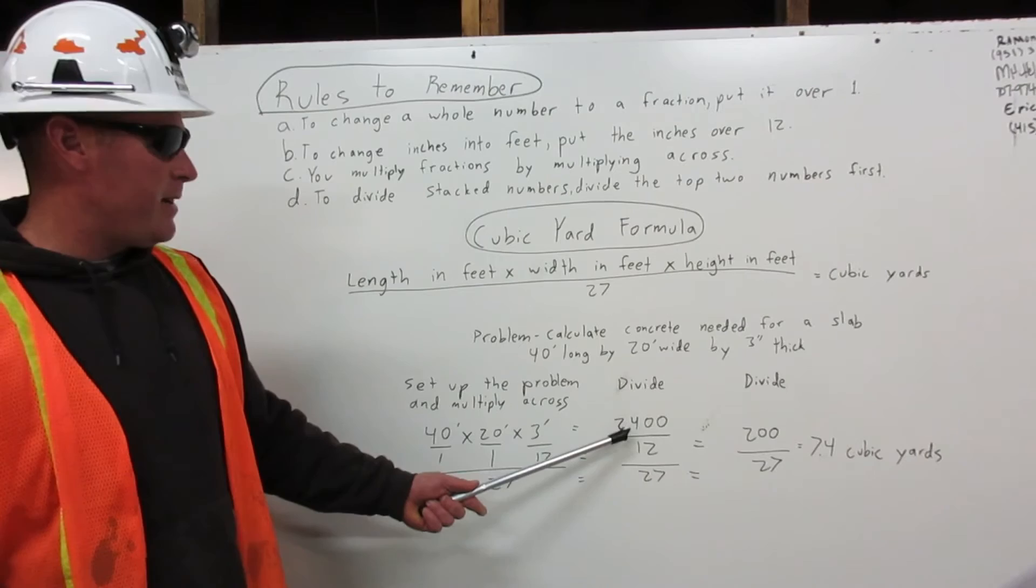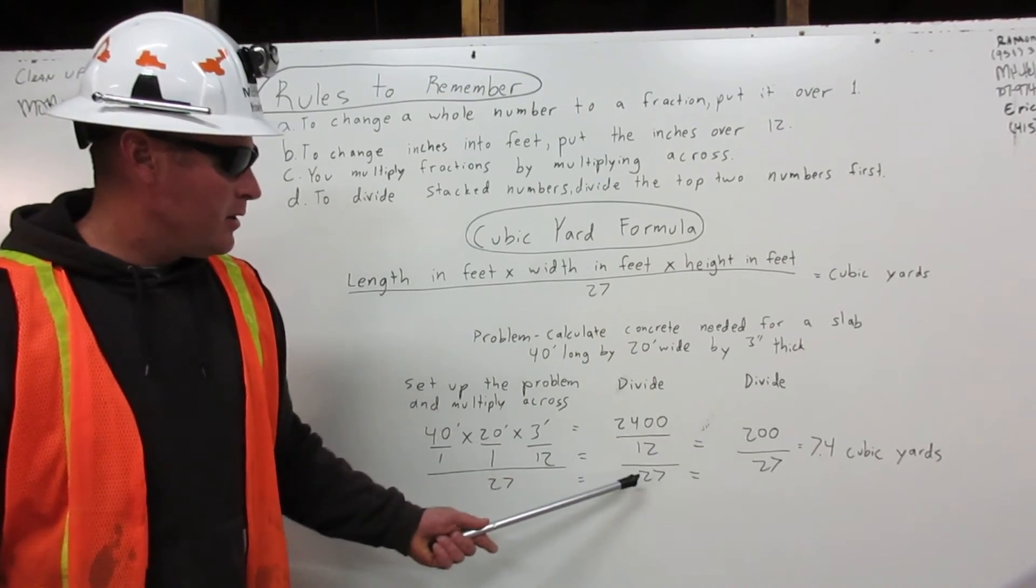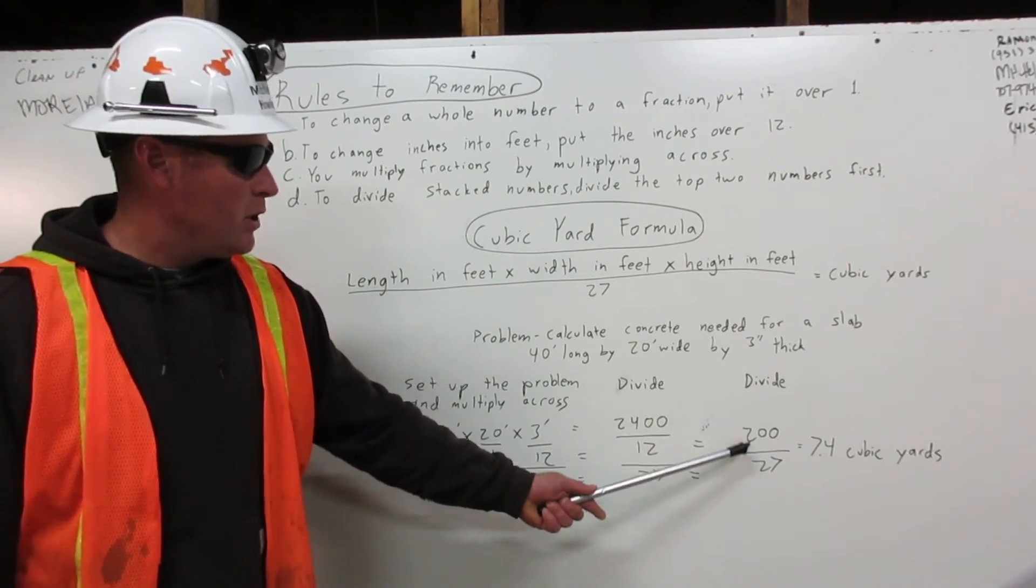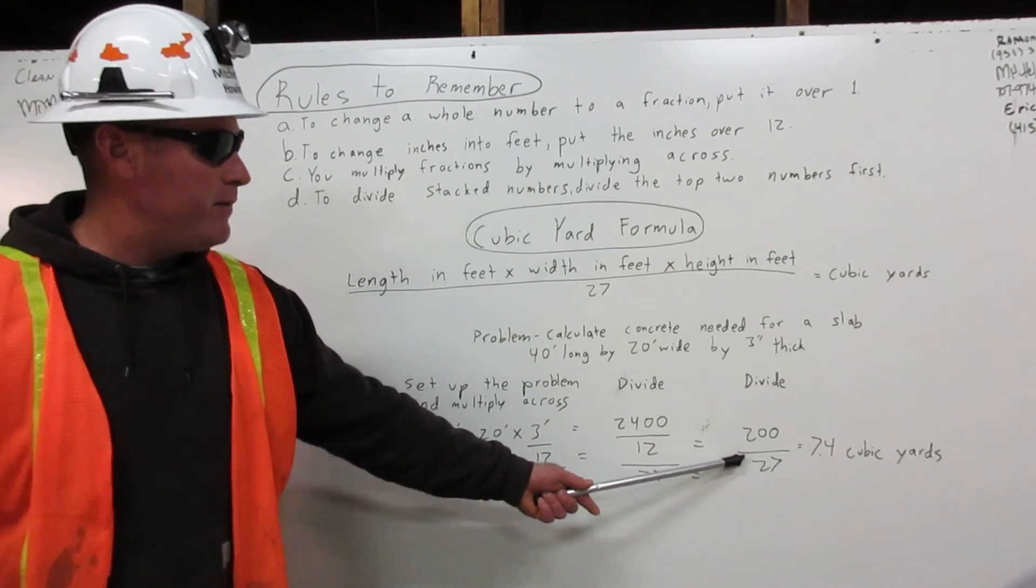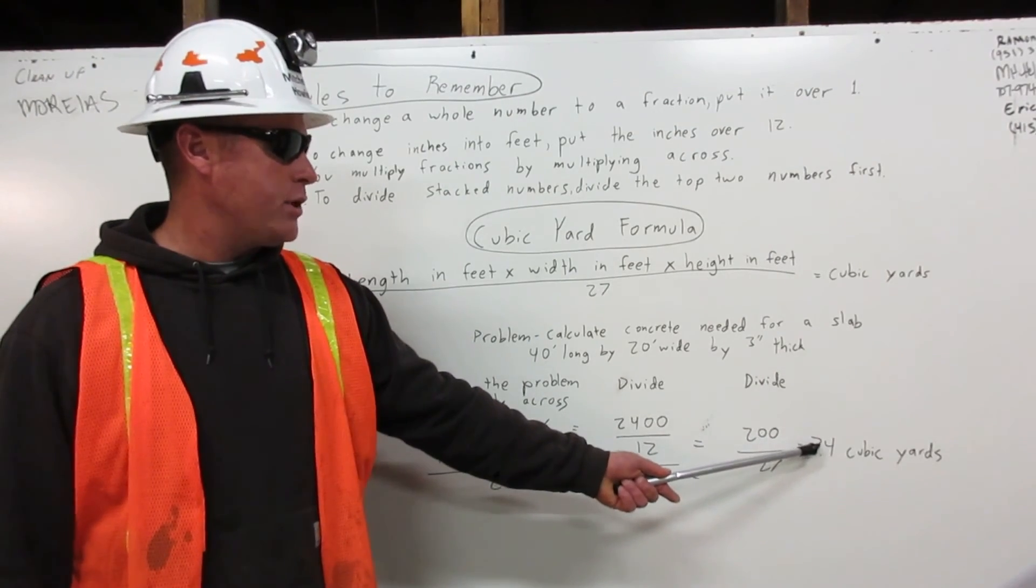2400 divided by 12 equals 200. Bring our 27 over. 200 divided by 27 equals 7.4 cubic yards.